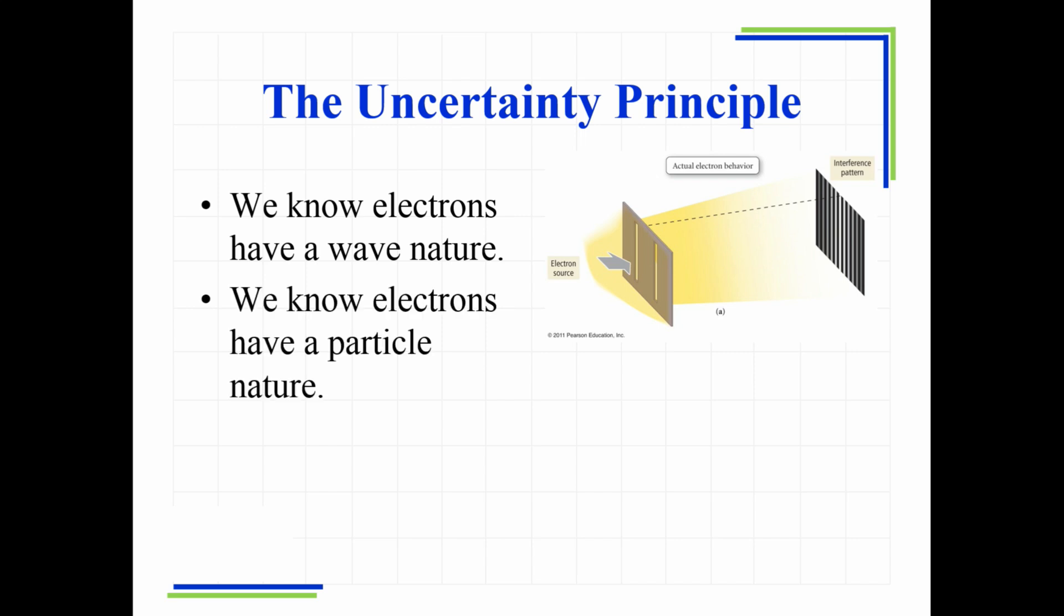All right, let's see what else we have here. This leads us, like I said we were going to, to what we call the Heisenberg uncertainty principle. We know that electrons behave with a wave nature because of that interference pattern: dark-light-dark-light-dark-light. So we know that electrons have a wave nature. We also know that electrons have a particle nature—they have a mass, they have a charge, and we can measure that mass.